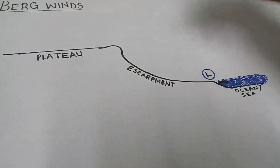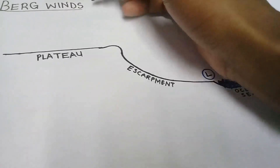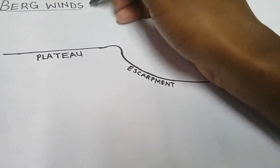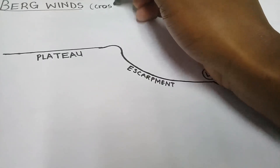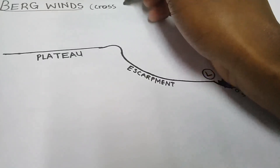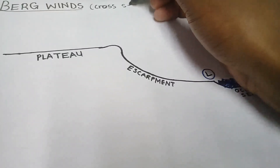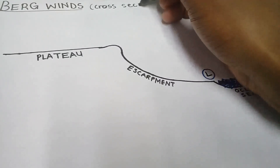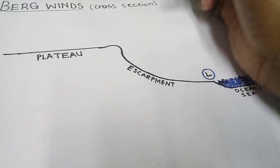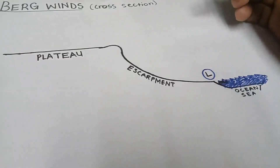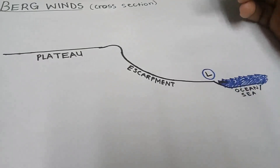This is a cross section of Berg winds, by the way. You can see this is a cross section. We also have a synoptic weather map — you can also show Berg winds in a synoptic chart.